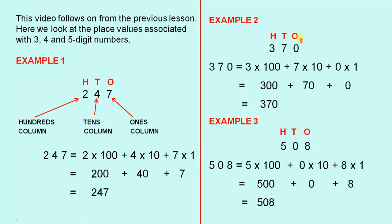Here we have 3, 7, 0, and they're the different columns. So 370 is 3 times 100, 7 times 10, and 0 times 1. So that's 300, 70, and 0,